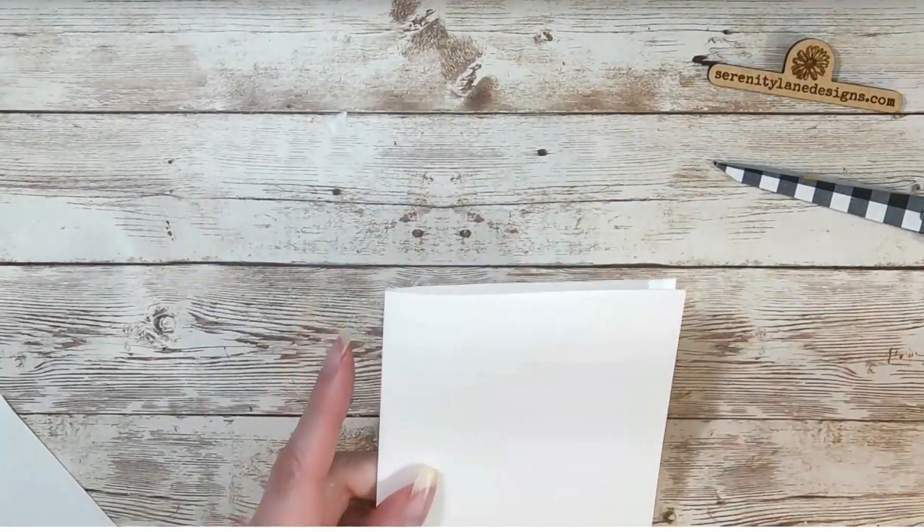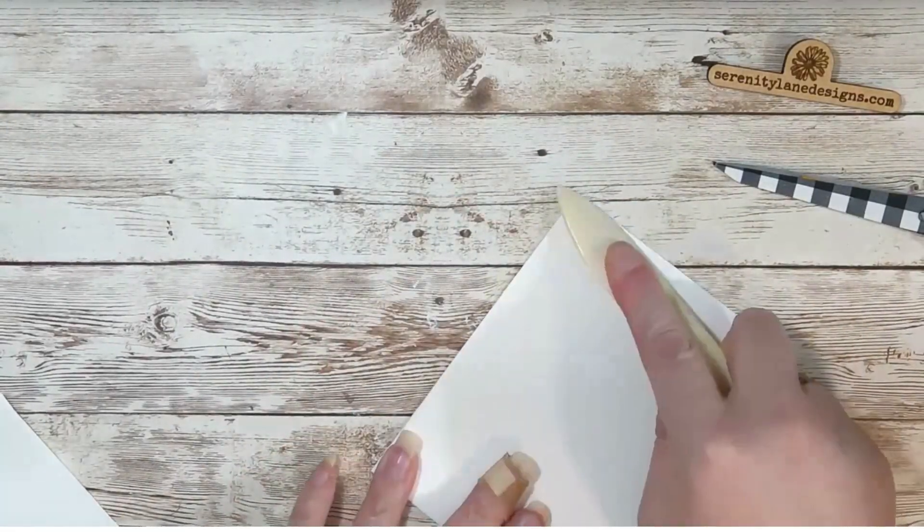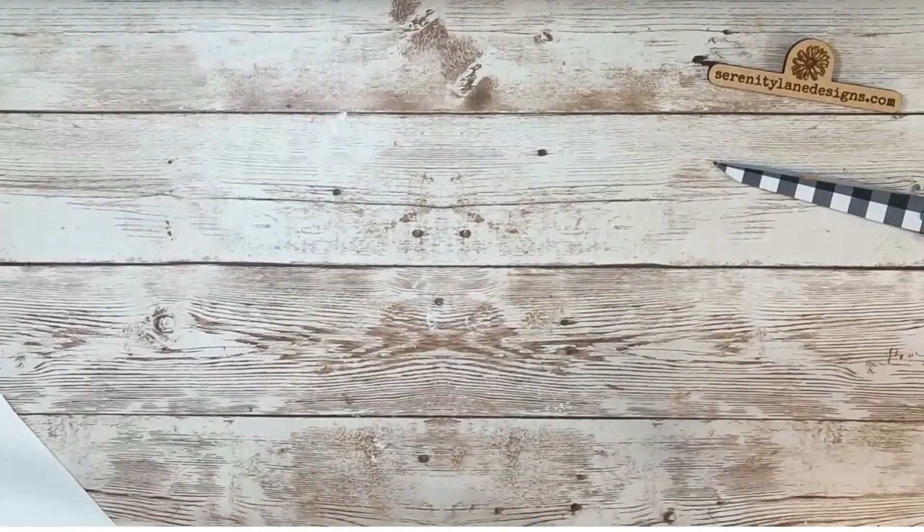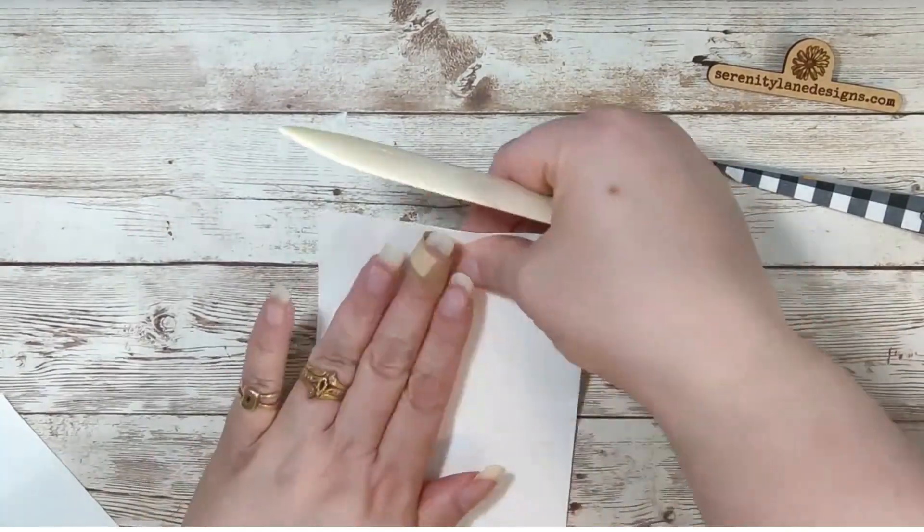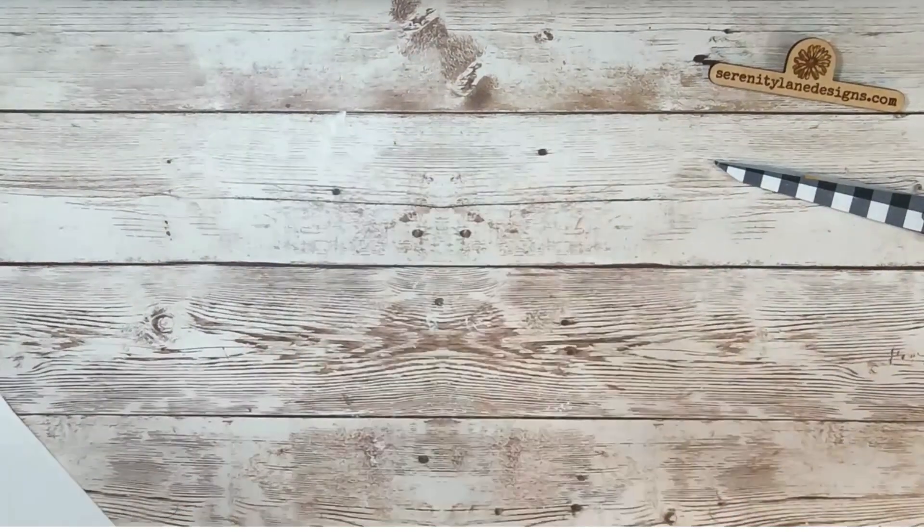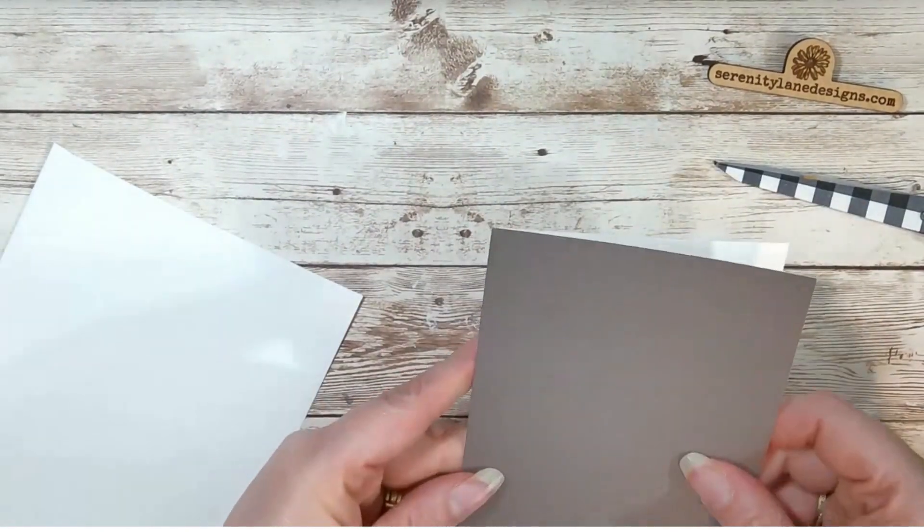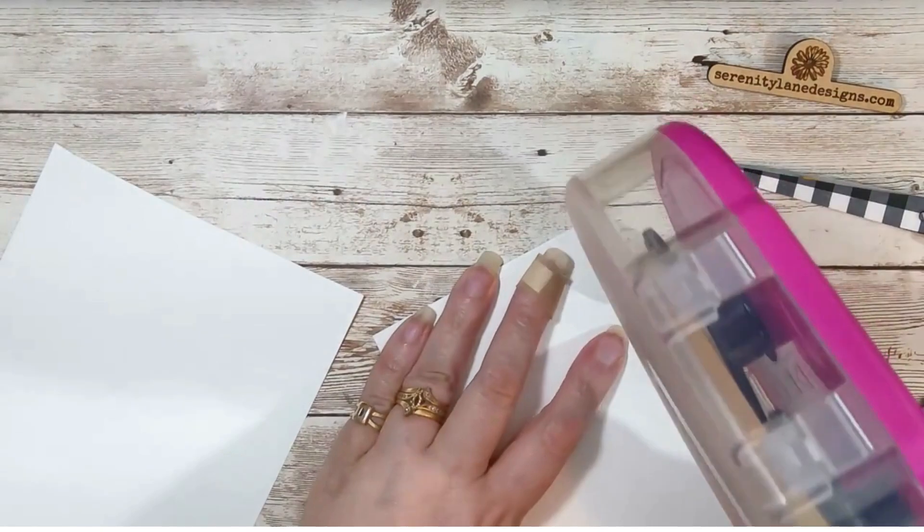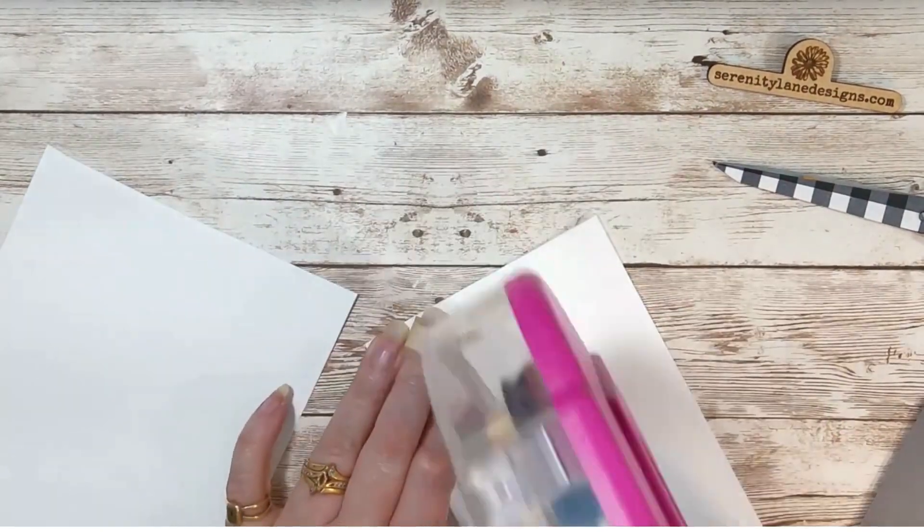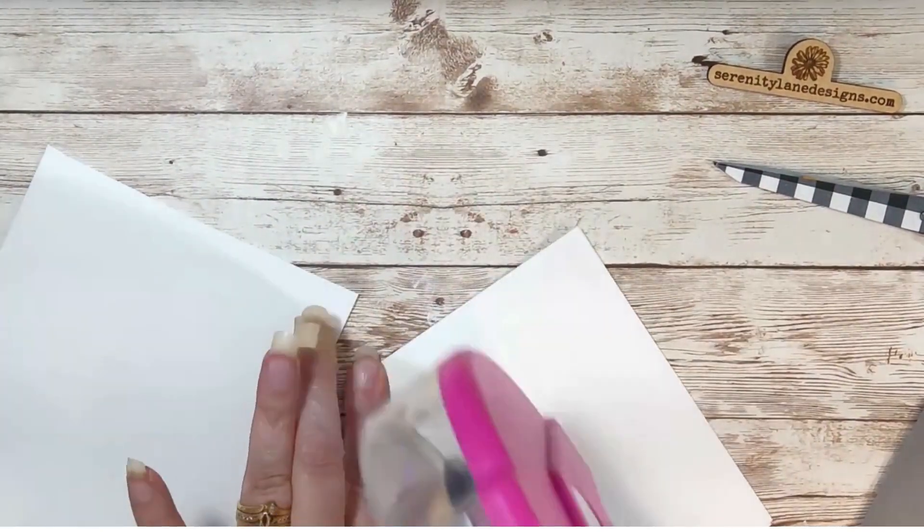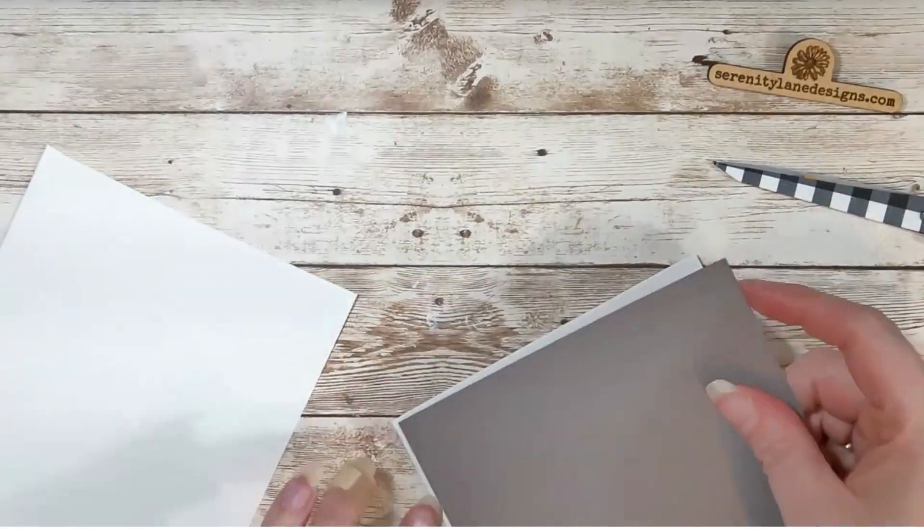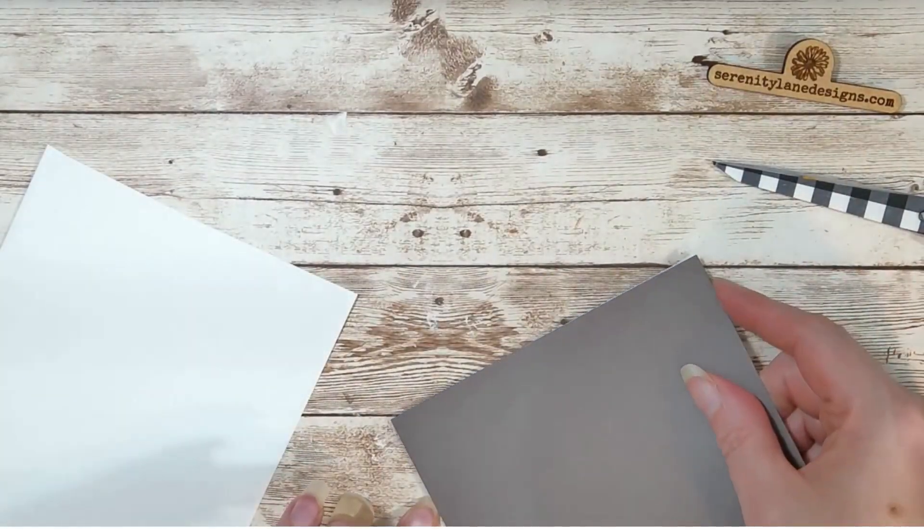Our next project is going to be the mummy card. For this you're going to take a piece of cardstock. This is an 8.5 by 11 cut in half and then fold it in half to make the card base. I started off by putting, I used a dark gray piece of paper to put over top of the front of the card.